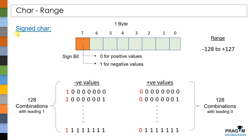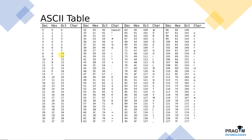So, specifying type modifier as signed for a character variable has really no use. Even if you specify it as signed, you will get 7 data bits to store the data of the variable. With these 7 data bits you can store a total of 128 positive values including zero, and with these 128 positive values you can represent all the 128 characters in the ASCII table.